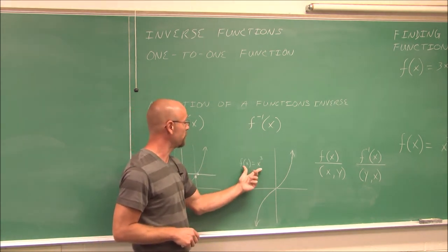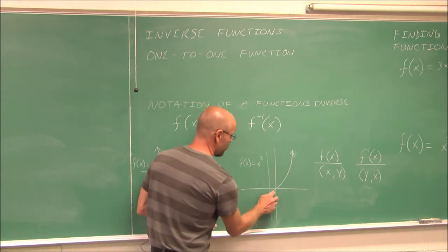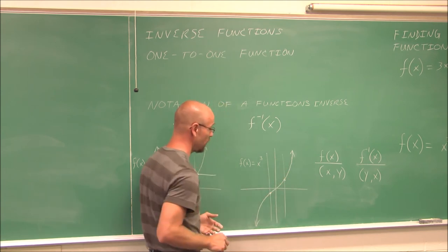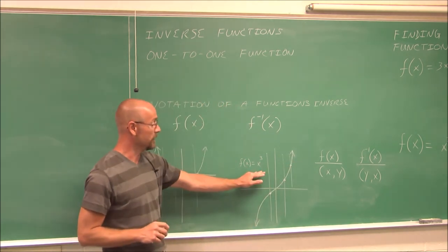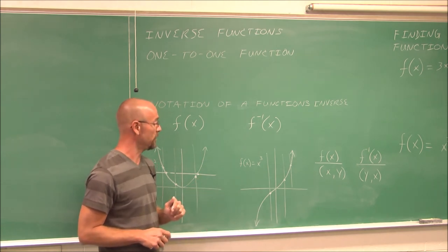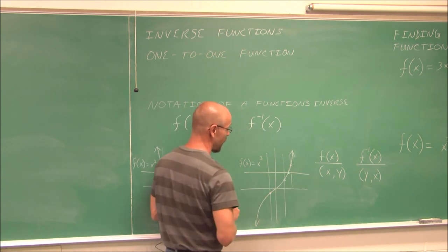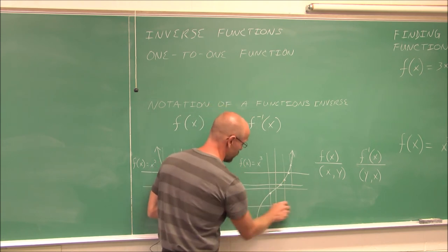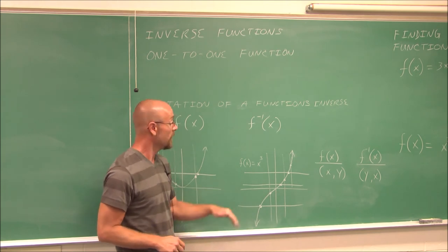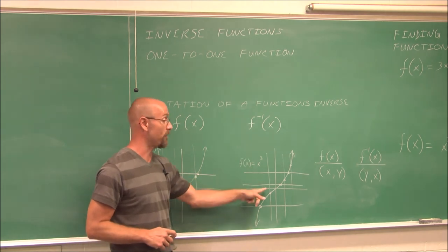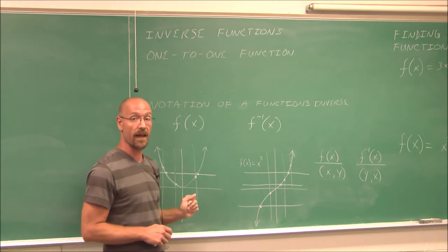Let's look at f of x equals x cubed. The vertical line test confirms it is a function — a vertical line only intersects it once no matter where drawn. For its inverse: drawing a horizontal line, it only intersects the graph once no matter where placed. So it passes both the vertical line test — it is a function — and the horizontal line test — its inverse will also be a function because it's 1-to-1. For every unique x, there is a unique y.